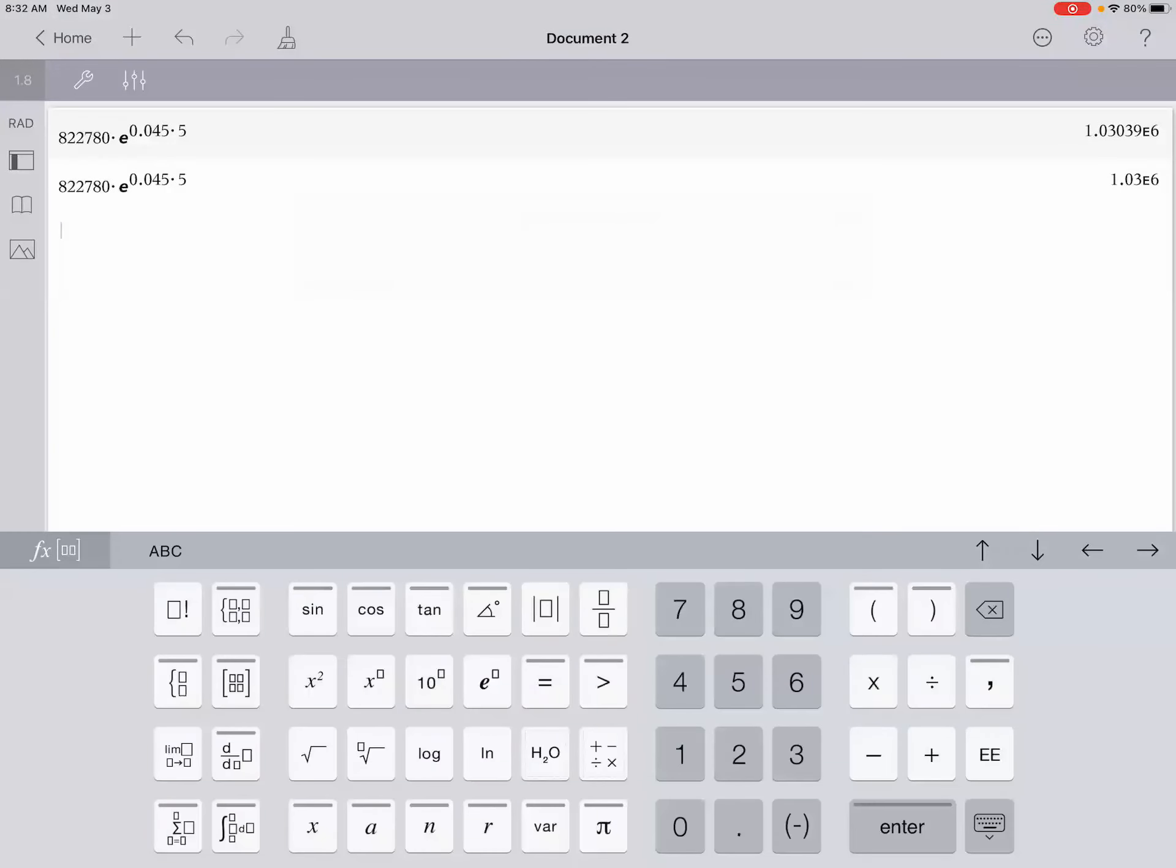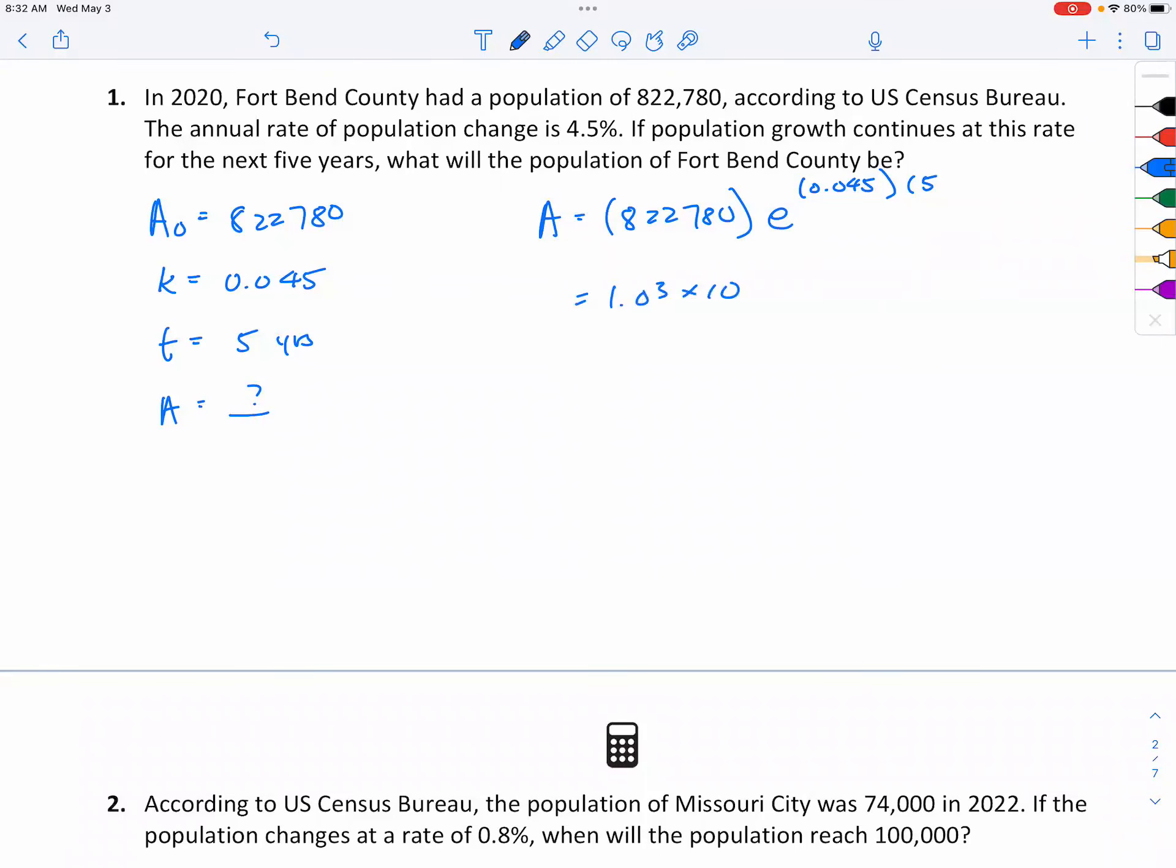I don't know how to put it, but yeah, 1.03 million. So if you put it in scientific notation, that's fine. If your calculator gives you the whole thing, that's cool too.